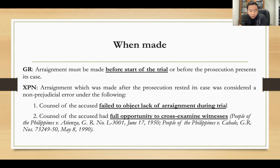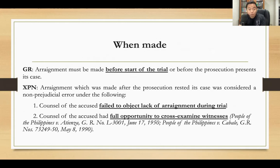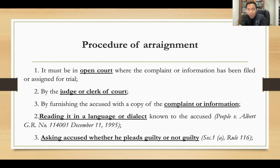There are exceptions wherein arraignment is made after the prosecution rested its case. First, if the counsel of the accused failed to object to the lack of arraignment during trial. Second, if the counsel of the accused had full opportunity to conduct cross-examination of witnesses. Under these two exceptions, arraignment is made after the prosecution rested its case. For example, if the case proceeded to pre-trial and trial but there was no arraignment, and the defense counsel failed to object, then arraignment can be made after the prosecution has rested.